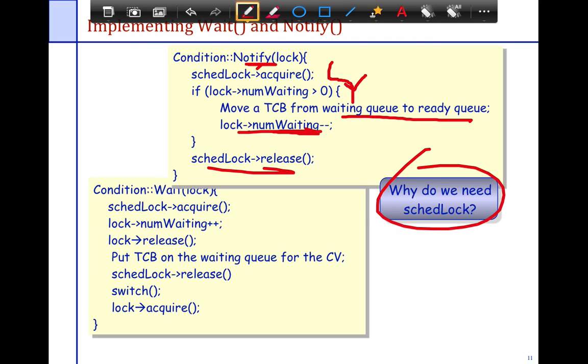Why do we need the sched lock? The reason we need the sched lock is because at the precise time that you're trying to notify, someone else may be trying to wait. And if that's the case, we want the operations on num waiting, and moving the TCB from the waiting queue, and all of those operations themselves be atomic, and all of those operations are essentially protected by sched lock.